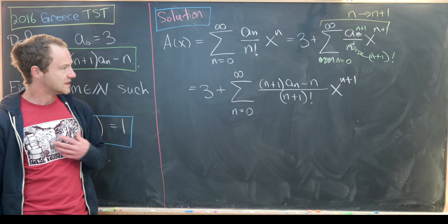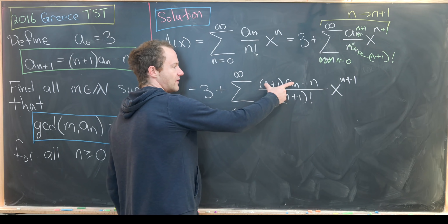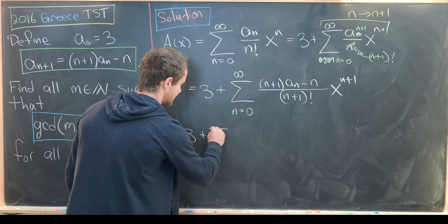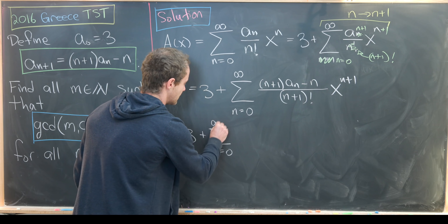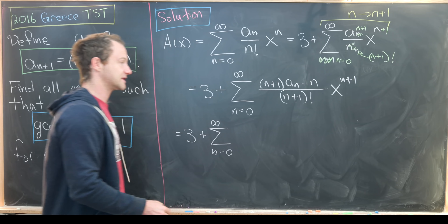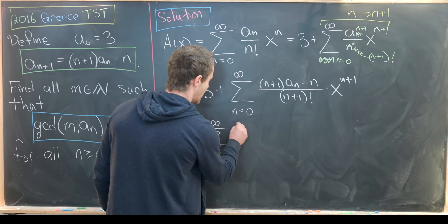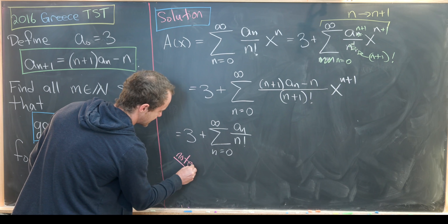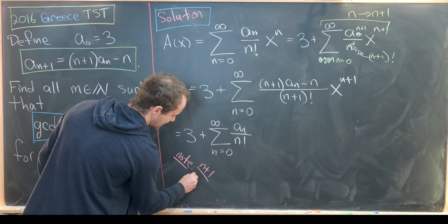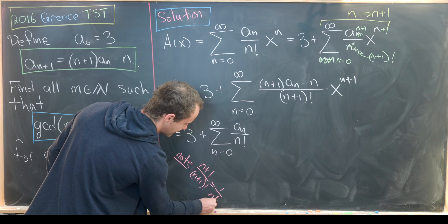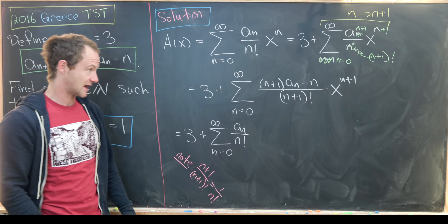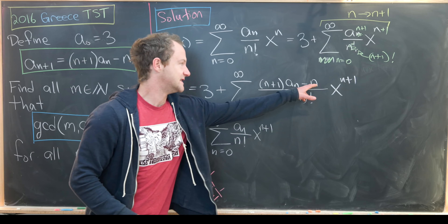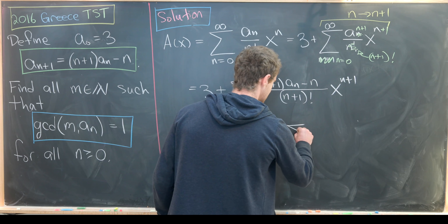This naturally breaks up into two sums: one involving (n+1)aₙ and the other involving −n. For the first sum, we use the fact that (n+1) over (n+1)! equals 1 over n!, which is a standard simplification trick. That leaves us with aₙ over n! times xⁿ⁺¹. The second sum involves −n over (n+1)! times xⁿ⁺¹.